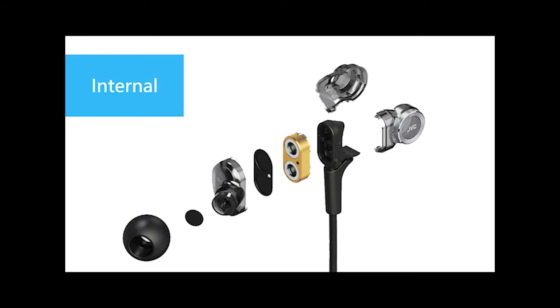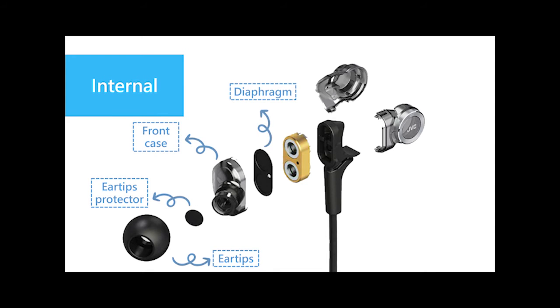Next, as you can see, the fundamental elements of earphones contain ear tips, ear tips protector, front case, diaphragm, stationary magnet, and back case.